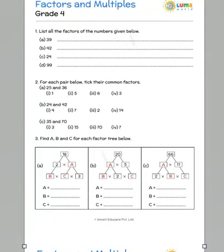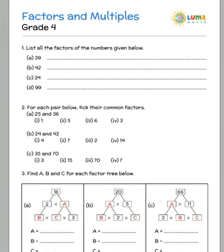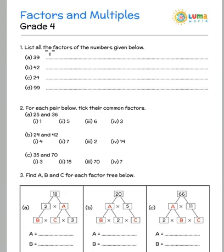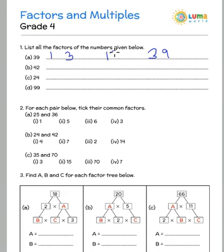The answers for factors and multiples — these are the numbers we have. For 39, remember 1 is always a factor, so we start with 1. 1 multiplied by 39 gives you 39. It is not divisible by 2, so we look at 3. 3 is a factor — 3 multiplied by 13 gives you 39.